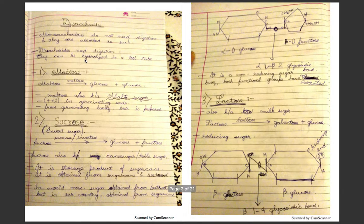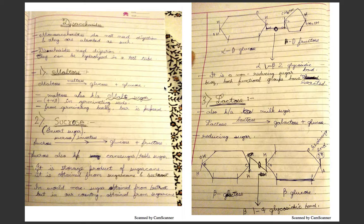This is the second part of the chapter biomolecules. In this video we have oligosaccharides and polysaccharides. We had done the monosaccharides in the last video. This video covers polysaccharides, which includes both oligosaccharides and polysaccharides.